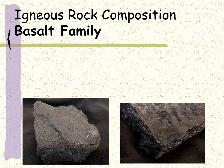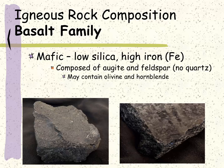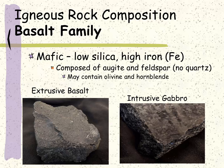On the other end of the spectrum, we have the basalt family, known as the mafic igneous rocks. They're relatively low in silica and high in iron and magnesium. In terms of minerals, these are composed mostly of augite and feldspar with basically no quartz. They may also contain significant amounts of olivine and hornblende. The most common example is basalt, but it is also possible to have the intrusive variety that cools within the earth — and this is gabbro. It's worth noting many people may refer to this as black granite, but geologically, there is no such thing as black granite. The intrusive basaltic family rocks are known as gabbro.